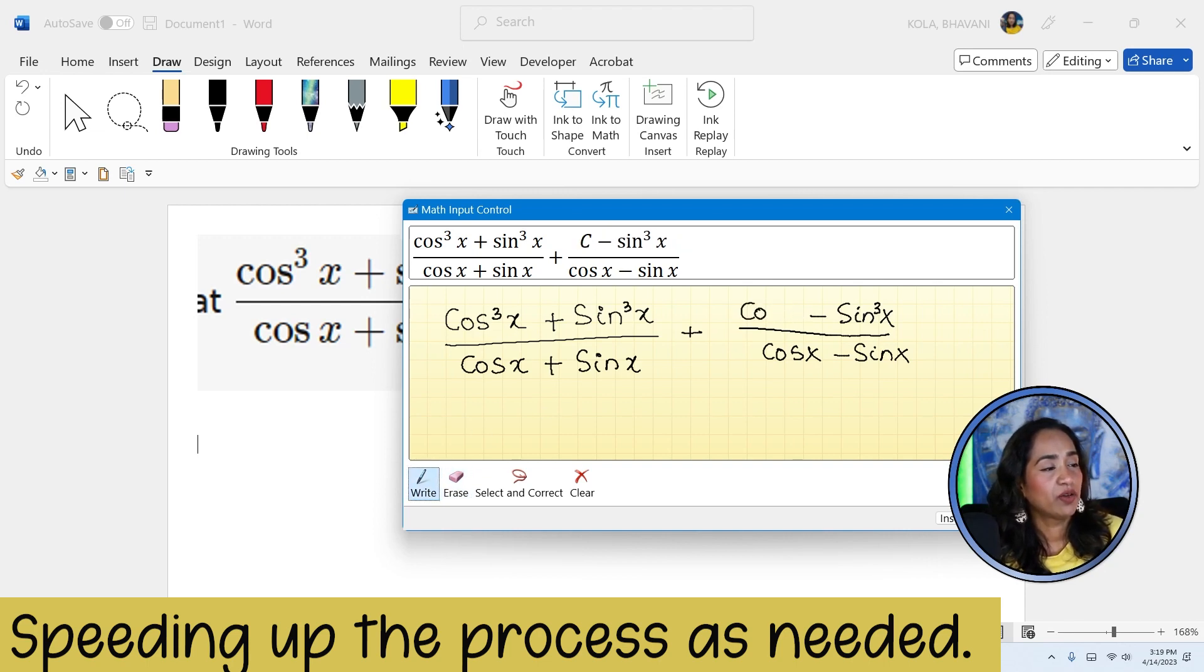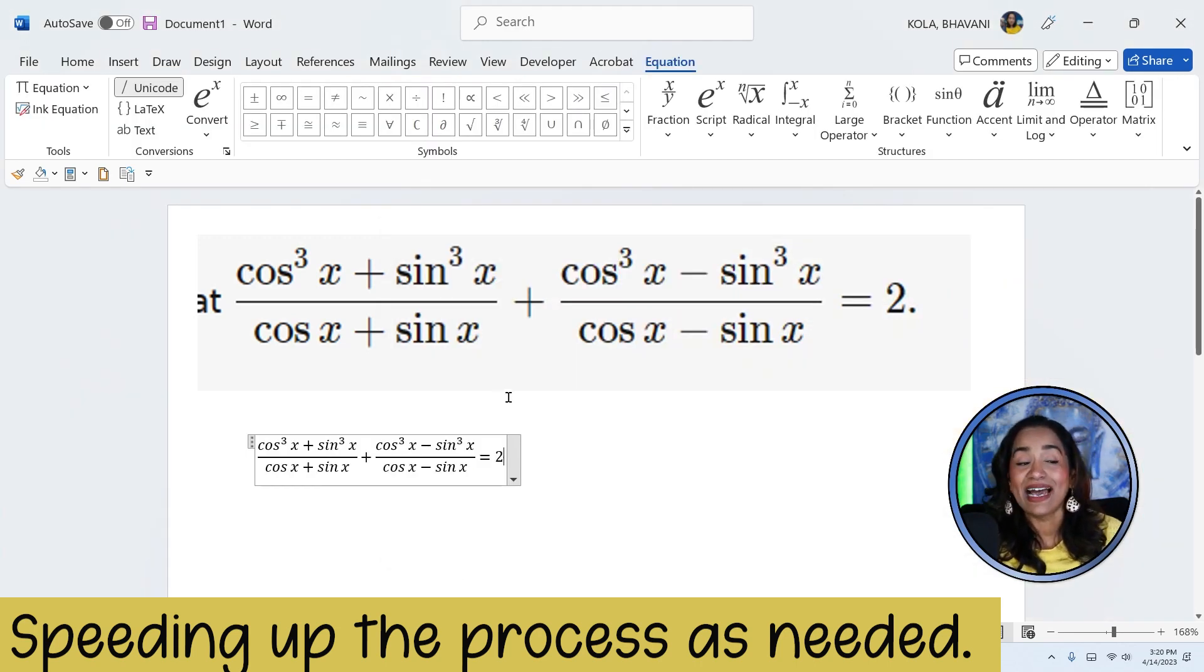And now let me go ahead and type in cosine x. And now I'm going to go ahead and plug in the little cube. There you go. And once this is done, this is equal to 2 and insert. As you can see, it was that simple.